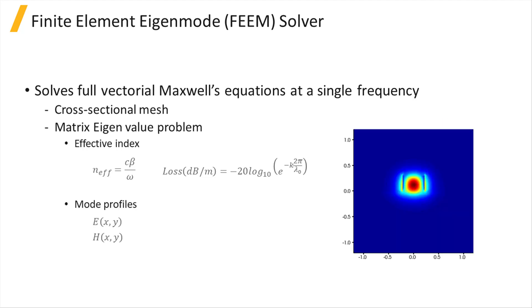The electric and magnetic field profiles of the waveguide modes are also calculated. The fields are normalized so that the optical power calculated from the Poynting vector is 1 Watt.